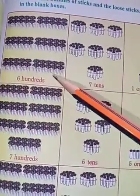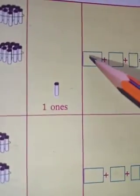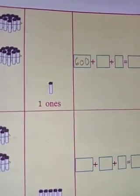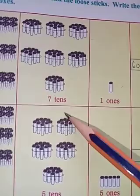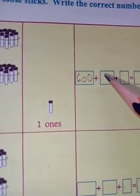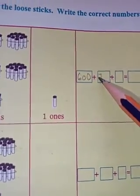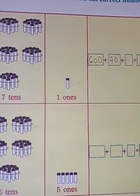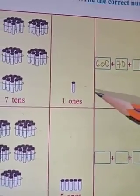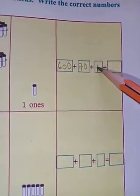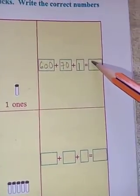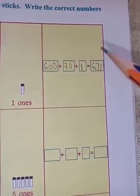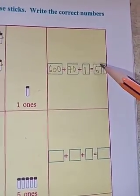Six hundreds. How many hundreds? Six hundreds. How many tens? Seven tens means seventy. Seven tens means seventy. One ones — one. Six hundred and seventy, one. Six hundred and seventy-one.